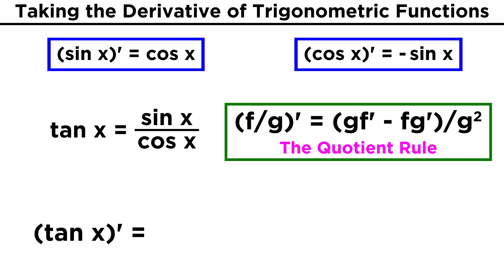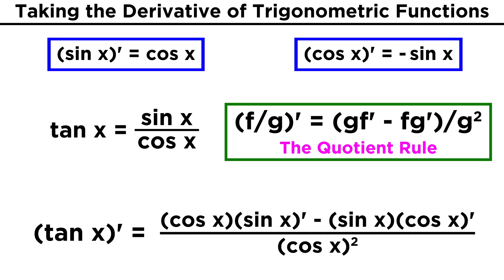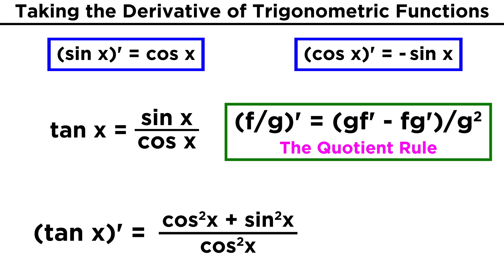That will give us cosine times the derivative of sine, minus sine times the derivative of cosine, over cosine squared. Evaluating these simple derivatives, sine becomes cosine, and cosine becomes negative sine, so this will simplify to become cosine squared plus sine squared over cosine squared.